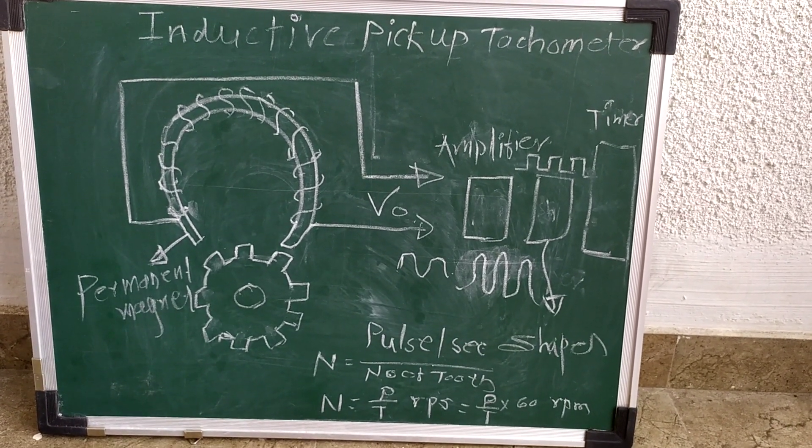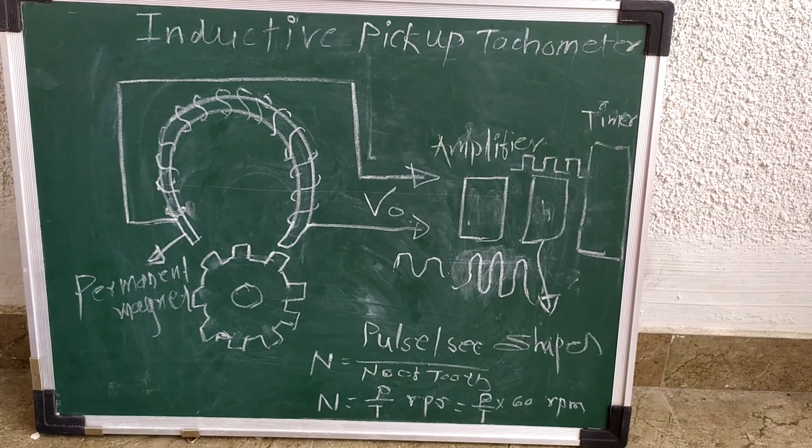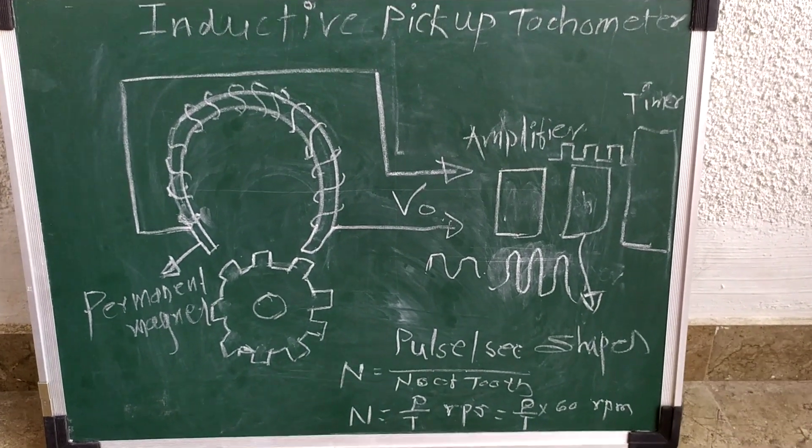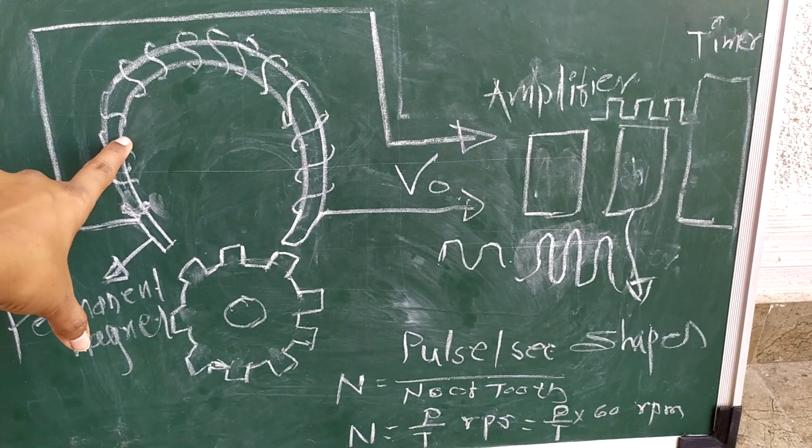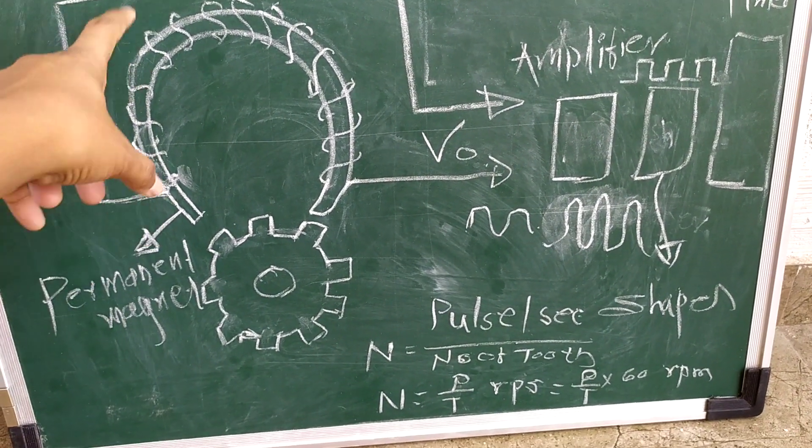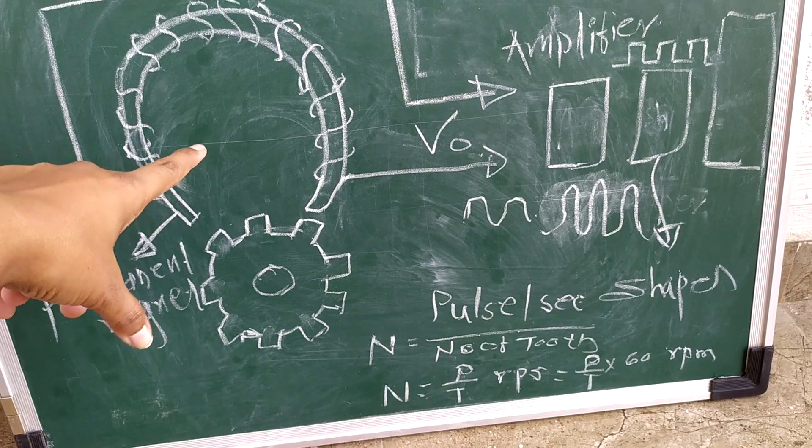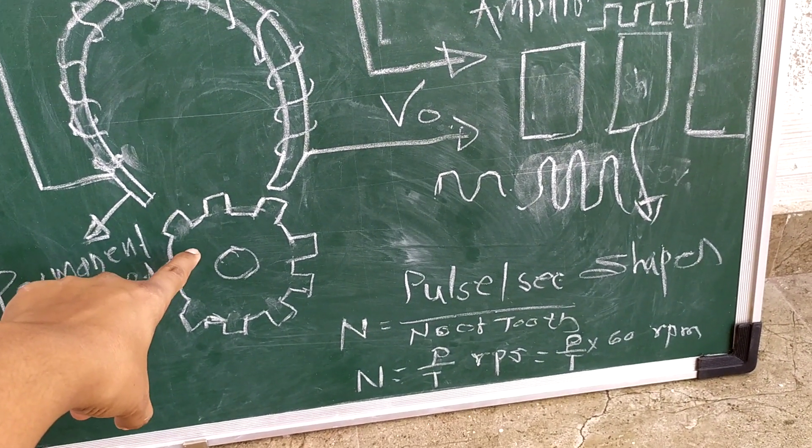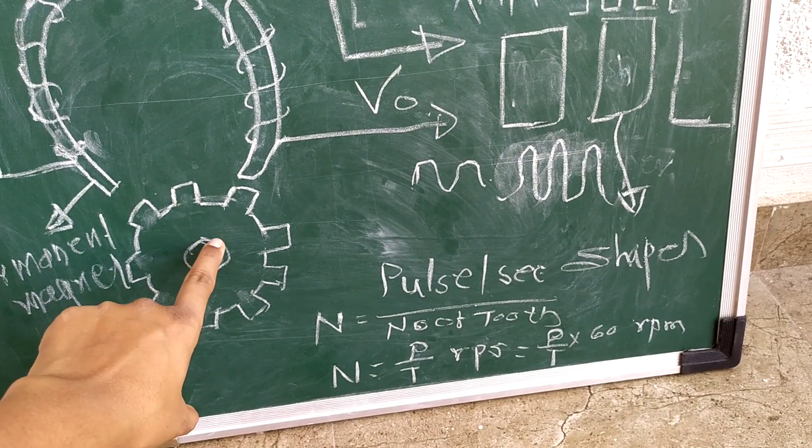Next measurement device: inductive pickup tachometer. For construction, we can see here the permanent magnet around which the coil is wound. Here is the toothed gear or wheel, and here is the central shaft whose speed we have to measure.